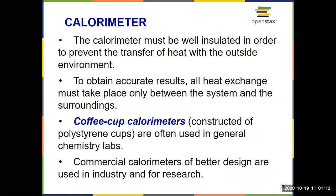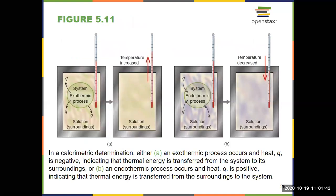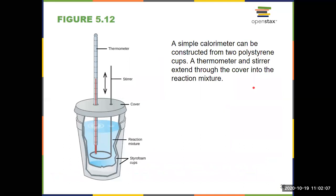A quick approximation of a calorimeter is using coffee cup calorimeters, where you just use polystyrene or foam cups in the lab. It's a quick practice in the Gen Chem lab, but you do have some heat lost to the environment, just like a throwaway coffee cup from Dunkin' Donuts. If you have a lab-grade calorimeter used in industry or research, those are designed to have better insulation. There's a general scheme shown here for both an exothermic process and an endothermic process, and here's a sketch of a coffee cup calorimeter.